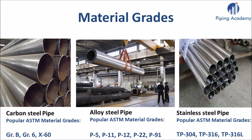Now let's get back to the topic of material grades. Let me introduce the most common ASTM steel grades you will often encounter when working with piping components. For carbon steel, very popular grades are Grade B, Grade 6 and X60 materials. For alloy material, it is often P5, P11, P12, P22 and P91. And for the group of stainless steels, it is often TP304, TP316 and TP316L.